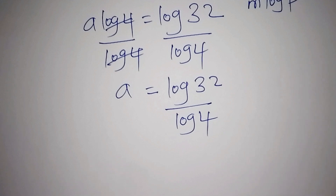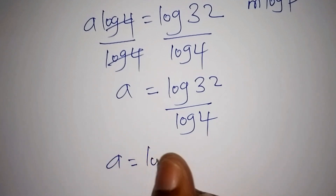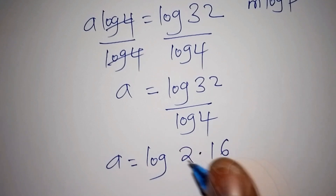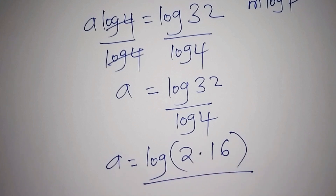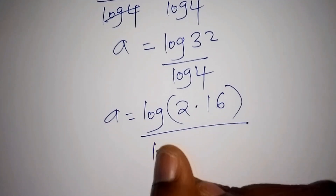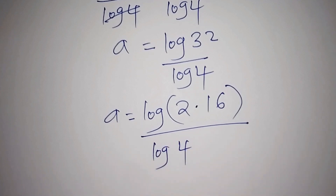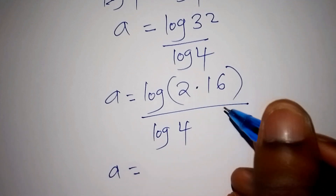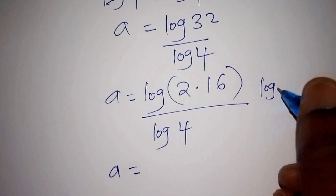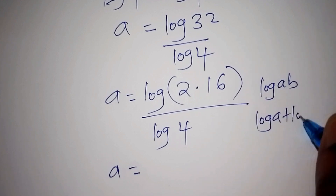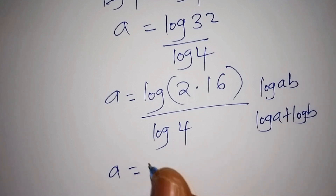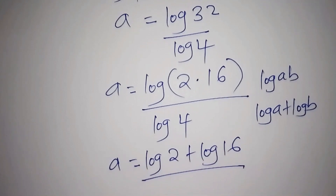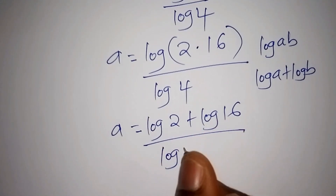We can rewrite this problem by now saying that a is equals to the log of 32 all over the log of 4. The log of 32 can also be written as the log of 2 multiplied by 16, all over the log of 4. When we have the log of a times b, this can also be written as the log of a plus the log of b. So now a is equals to the log of 2 plus the log of 16, all over the log of 4.